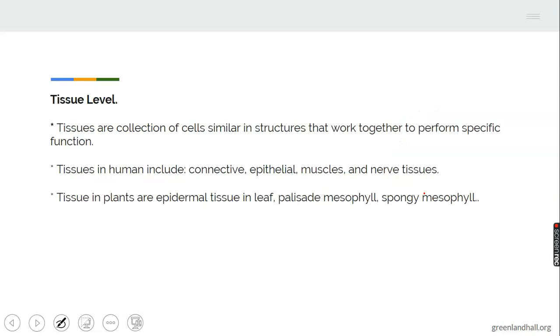Cells that exist in the tissue level. Tissue is a collection of cells that work together to perform a specific function. In human, tissue includes the connective tissue, the epithelial tissue, the muscle tissue and the nerve tissue. In plants, tissues are epidermal.